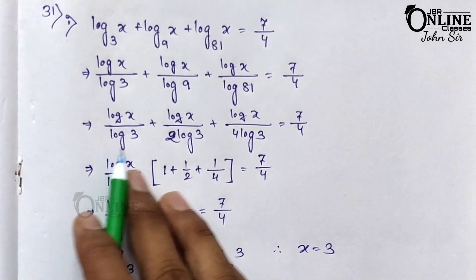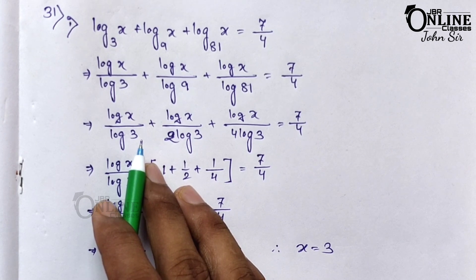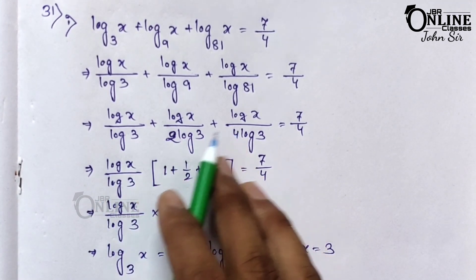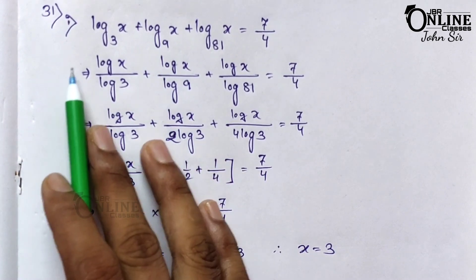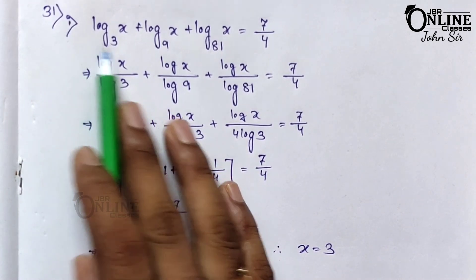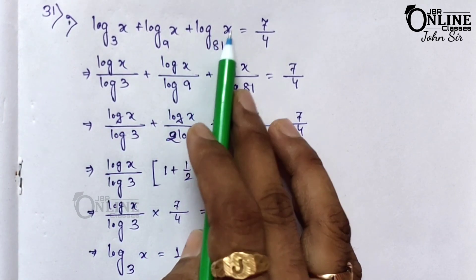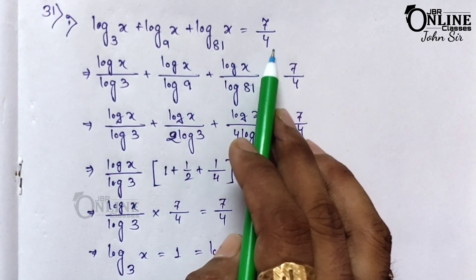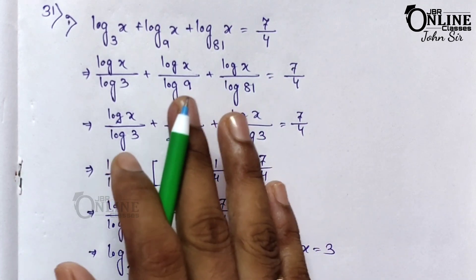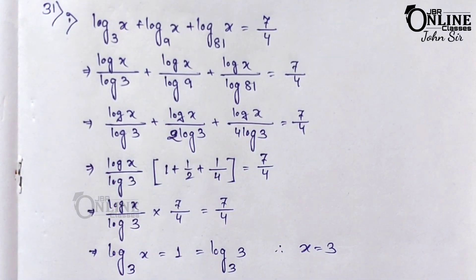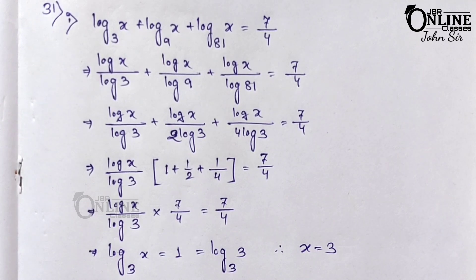Sum number 31 is the last problem in this exercise. If you like my video, please share it with your friends and relatives and subscribe to my channel. Sum number 31.1: log₃ x + log₉ x + log₈₁ x = 7/4. Note that sum 31.1 and 31.2 are similar problems, so I hope you can solve 31.2 as well.